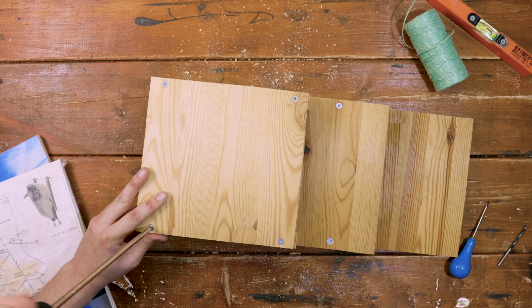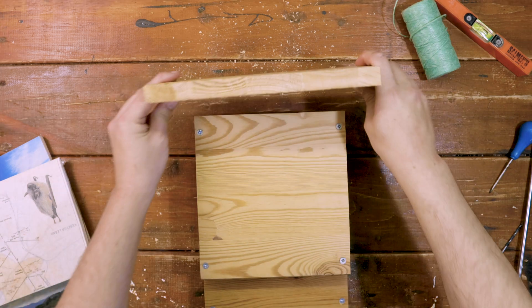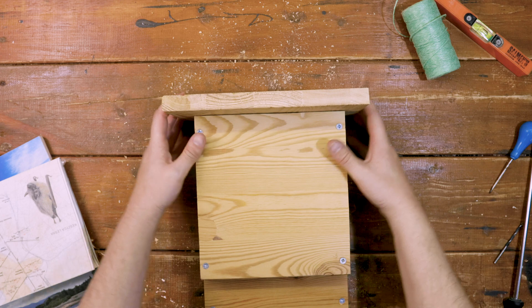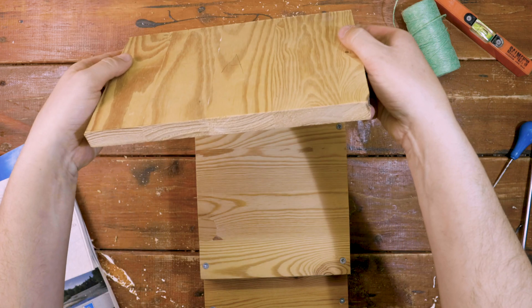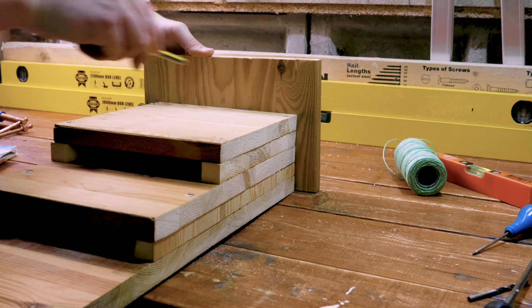We don't want to get the bats wet, so the final piece is the roof. Just make sure that you line the screw holes up with the main box. Making this mark with a pencil can really help.